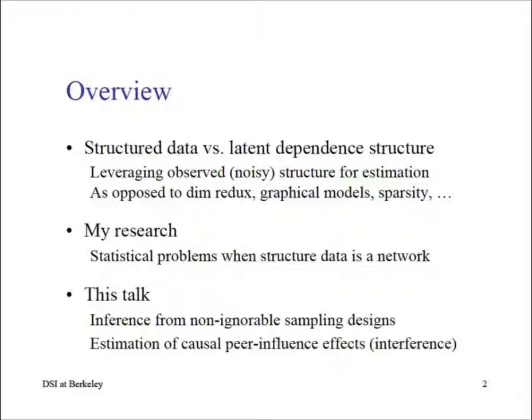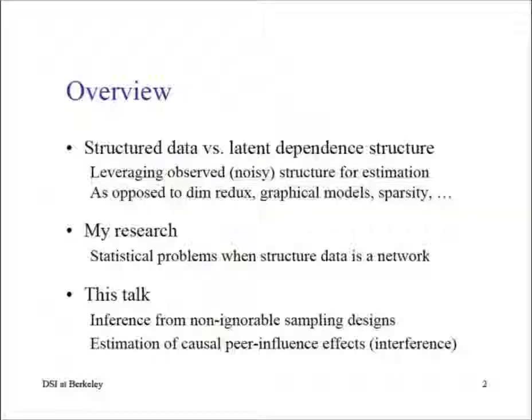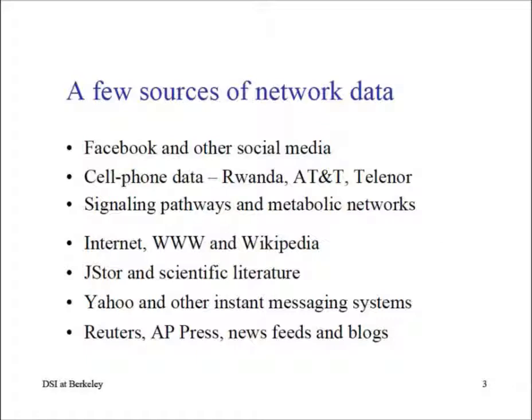The data matrix is an n-by-p matrix where you have n individuals and p covariates. People posit iid vector-valued p-dimensional observations, and the graph is the result of inference — it's not what you observe. In this talk, I'll present situations where network data raises interesting statistical challenges: how to make valid inference with stated coverage properties from a non-ignorable sampling design, and how to estimate causal peer influence effects on a social network.